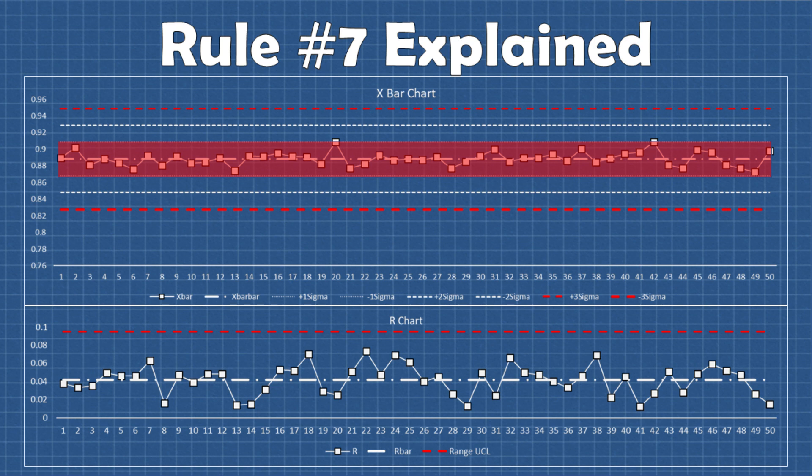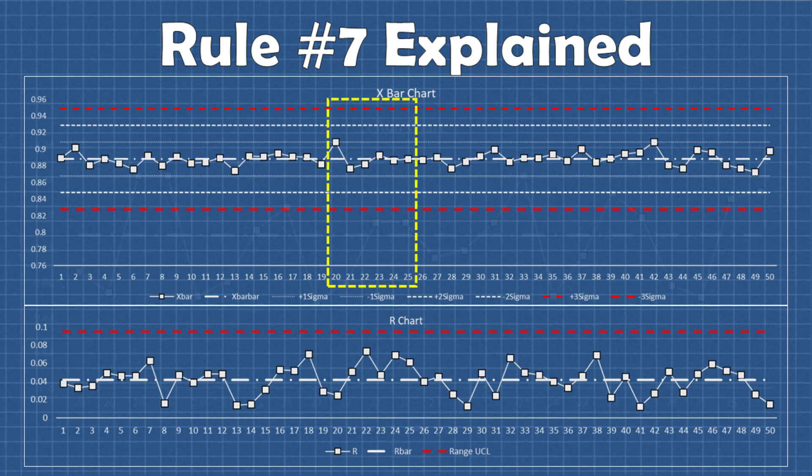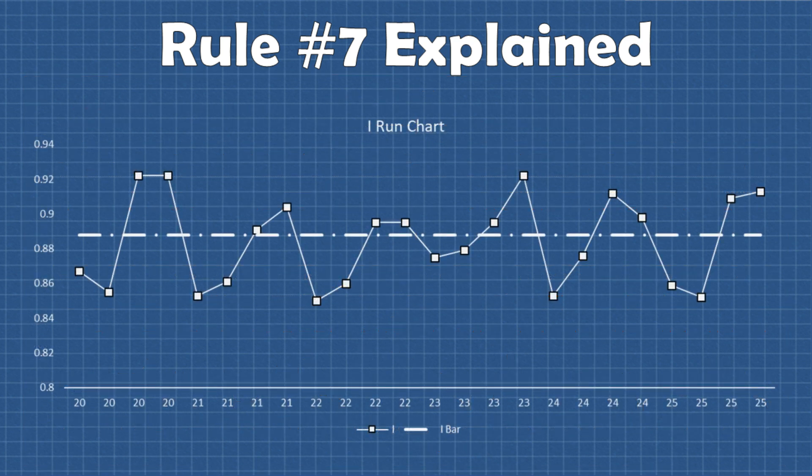Pretty much all the data points are within one sigma of the mean. So what if we look at a chart of all the individual values without averaging the subgroup values. Let's just look at a small section. So here are the individual values of each sample. These are the four values that were subgrouped to make the 20th sample set.